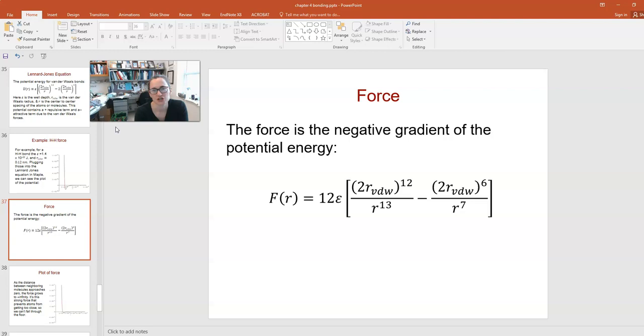You can also take your potential energy and do the negative gradient, and you'll end up with an equation for the force. The force from van der Waals bond F(R) is equal to 12 epsilon times 2 times the van der Waals radius to the 12th power divided by R to the 13th minus 2 times the van der Waals radius to the 6th power divided by R to the 7th. So there's the force.